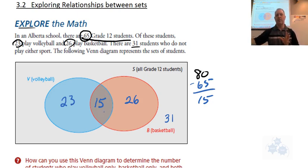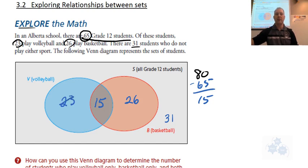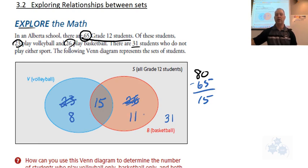Now if I've done this, does that solve my problem? 15 there — am I good, is that up to 65? What we should have done is taken 15 of these 23 and moved them over to the overlapping part of the circle. So by putting 15 here and not adjusting the 23, we need to subtract 15 from 23, leaving 8 students in that region. Likewise for the basketball players, it's 15 of those that also play volleyball, so we have 11 left there.